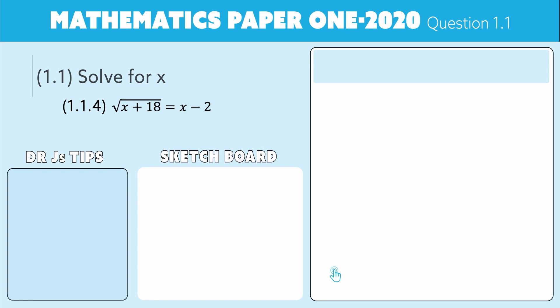Question 1.1.4, an interesting five-mark question. It's an equation because there's an equal sign, so we're solving equations here. It says the square root of x plus 18 is equal to x minus 2. We're supposed to solve for x here. I've got quite a few tips for you, and the big tip is you need to do restrictions.